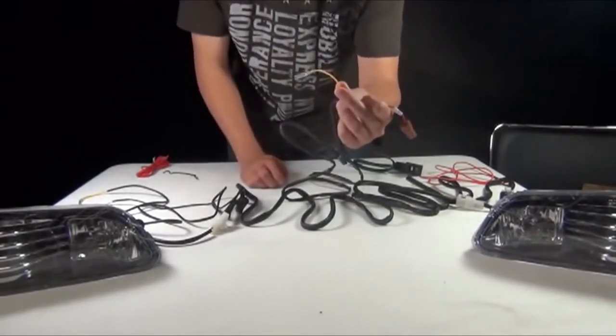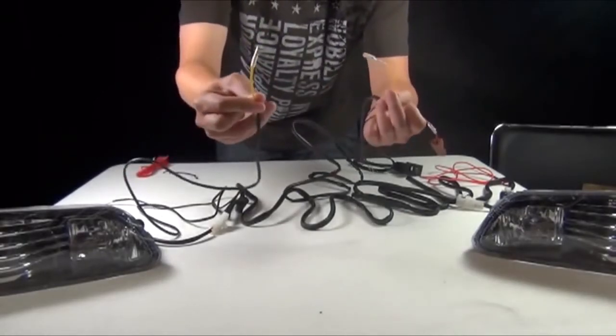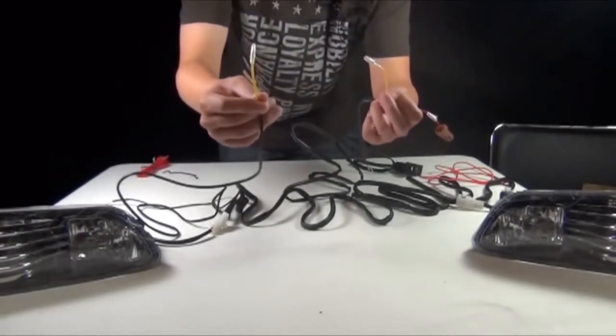Then you will have the yellow wire which should connect to the other yellow wire that you have to insert through the firewall.